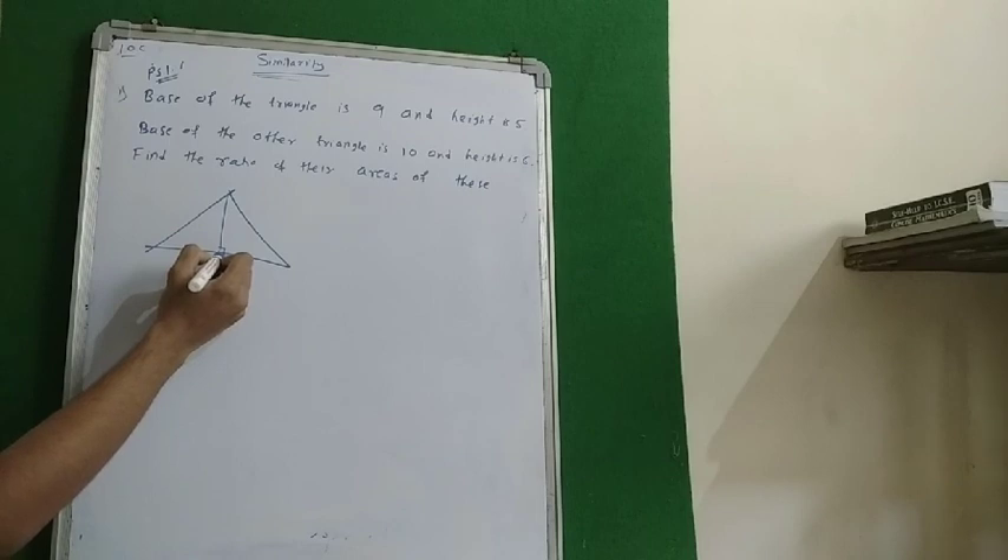The base of the triangle is 9 and the height of the triangle is 5. Suppose this is a triangle, this is a perpendicular drawn. A perpendicular drawn is called a height, and where the perpendicular is drawn is called a base. So base of the triangle is 9 and height of the triangle is 5.